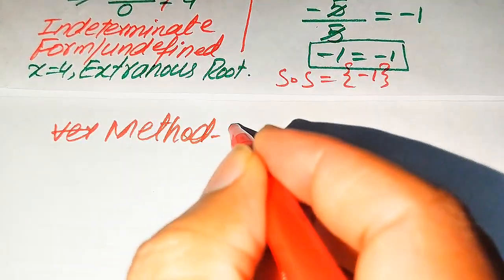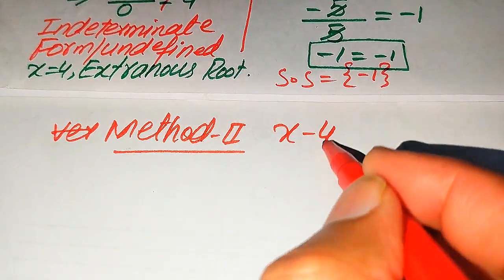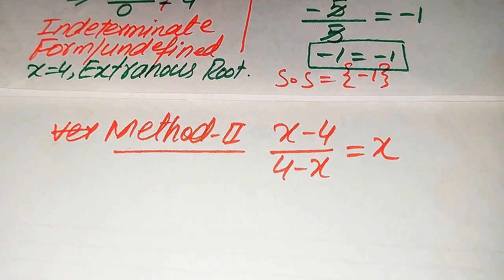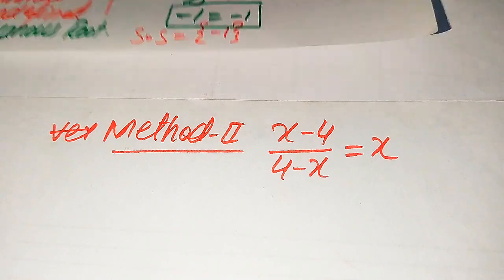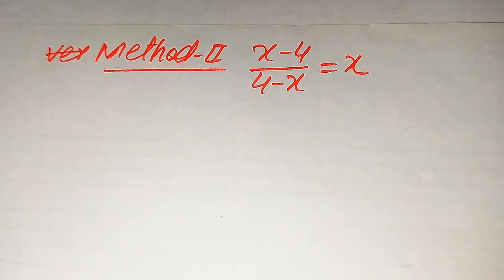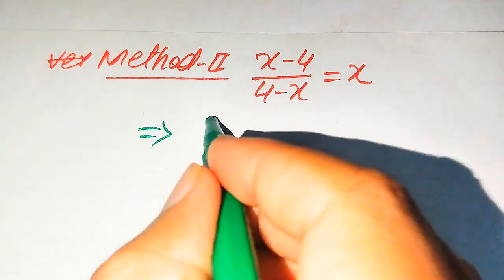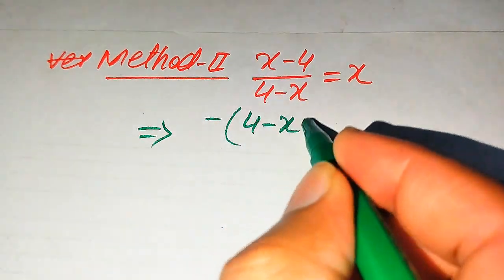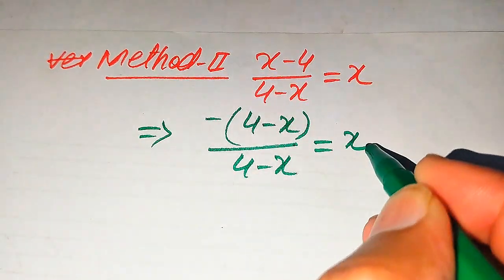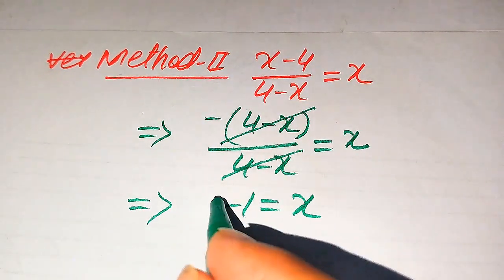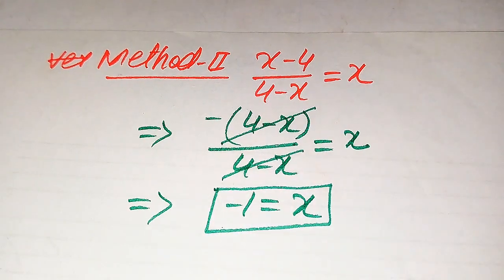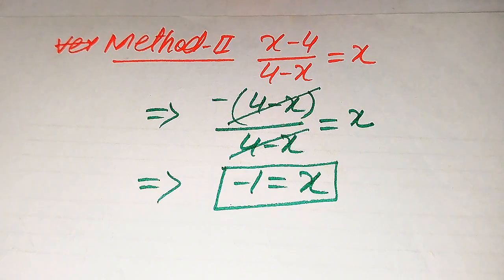In the second method, the given equation is (x minus 4) divided by (4 minus x) equals x. If we focus on the numerator, we can take a negative sign common from it: the numerator x minus 4 becomes negative(4 minus x). So the equation becomes negative(4 minus x) divided by (4 minus x) equals x. The (4 minus x) cancels, giving minus 1 equals x. This is the final value of x from the second method, and we already verified that x equals minus 1 satisfies the given equation.